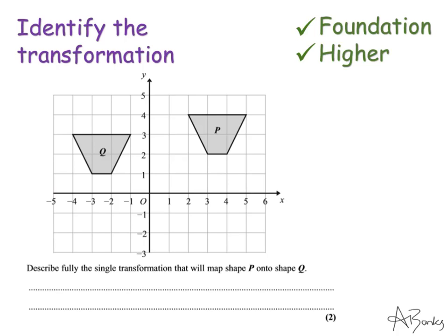In this example we can see that the shape has not been turned, so it's not a rotation. It's not been reflected because it's actually moved upwards — if shape Q was up one square it could be a reflection, but it's not. The shape hasn't got any bigger or smaller; all that has happened is it has been moved on the grid. The word for a move is translation, so I'm going to write translation. You need to make sure you're using the correct word — you can't just say 'moved'.